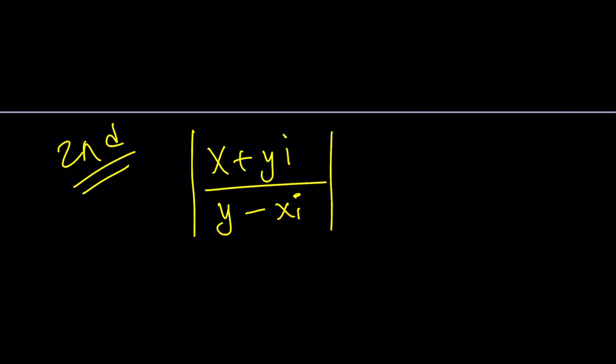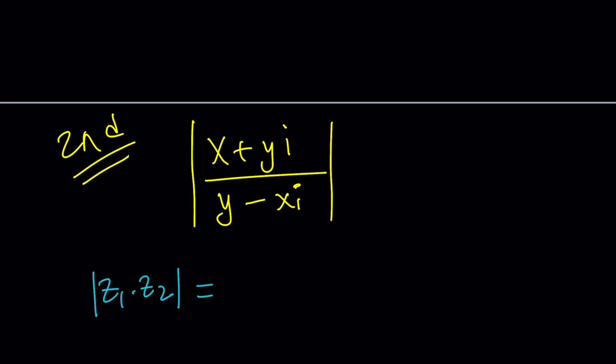But simply put, if you have the product of two complex numbers z sub 1 and z sub 2, their absolute value is going to be the product of the absolute values. And this is true for real numbers too. It applies to real numbers as well, of course. You can do it.